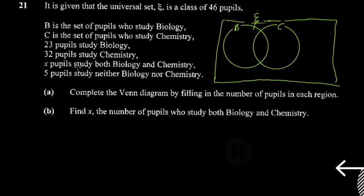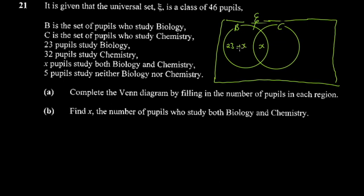Starting with the intersection: x pupils study both biology and chemistry, so the intersection is x. 23 pupils study biology, so the biology-only region is 23 minus x. The reason I write 23 minus x is that the x pupils are already included in the intersection, so you subtract them. When you add 23 minus x plus x, you get 23.